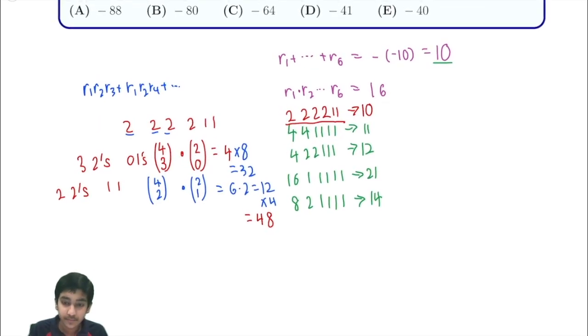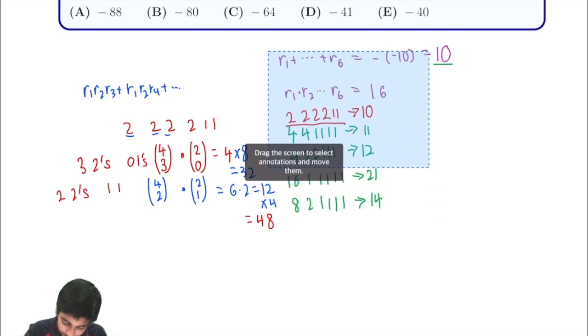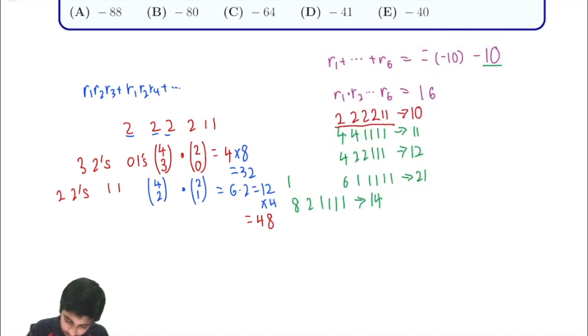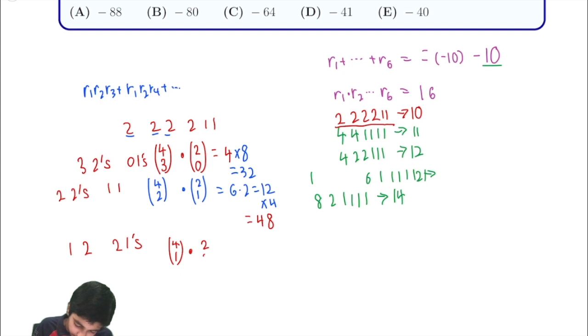The final case is that we can have 1 two and 2 ones. Actually, we can have 1 two and 2 ones. How many ways are there to do this? You can choose 1 of the twos and you can choose both of the ones. So we have 4 choices for the 2, 2 just 2 choices for the 1, and that's just going to be equal to 4 times 1 equals 4. And then again, we multiply it by 2 because that's going to be the product in these cases, which is 8.